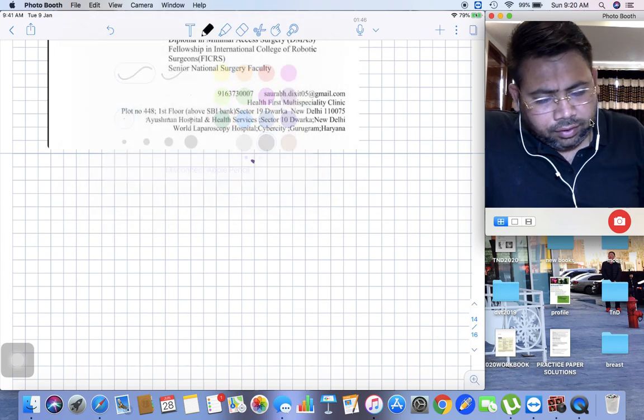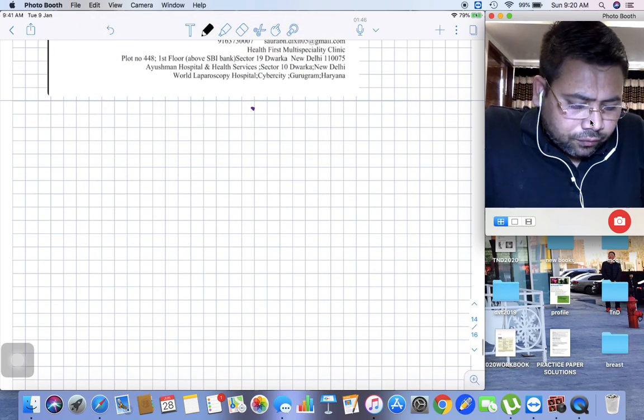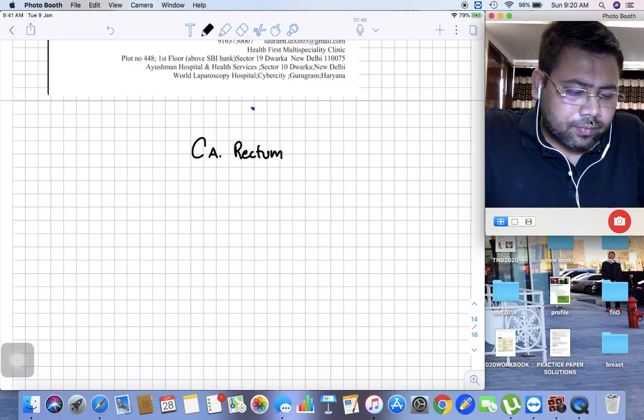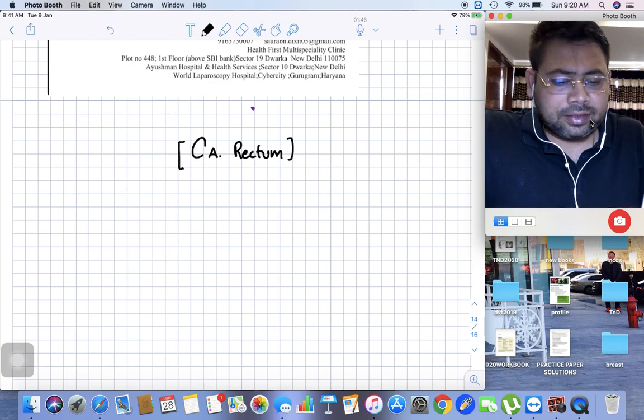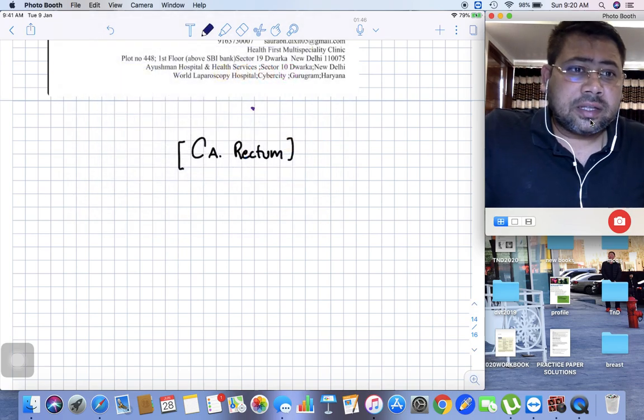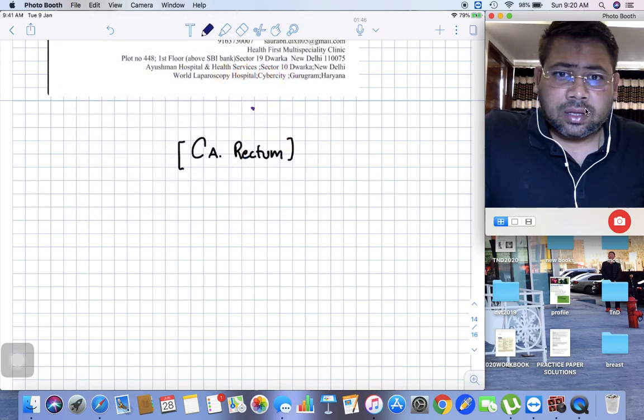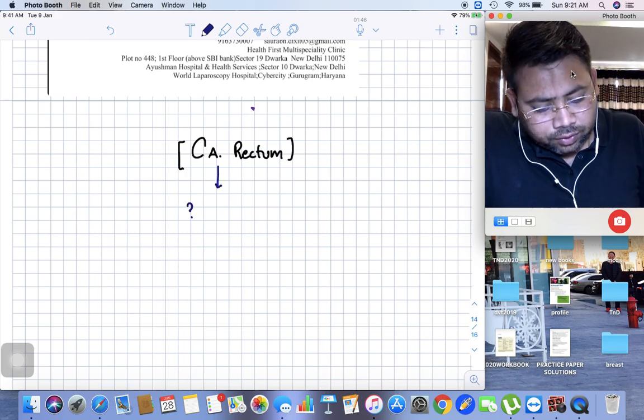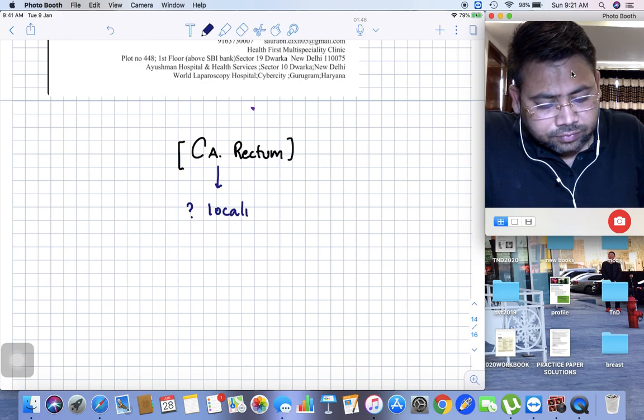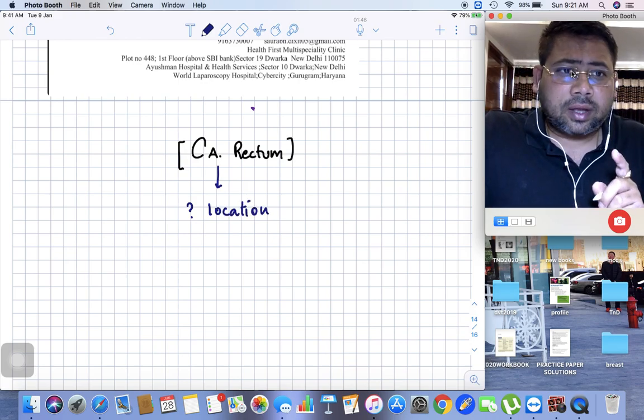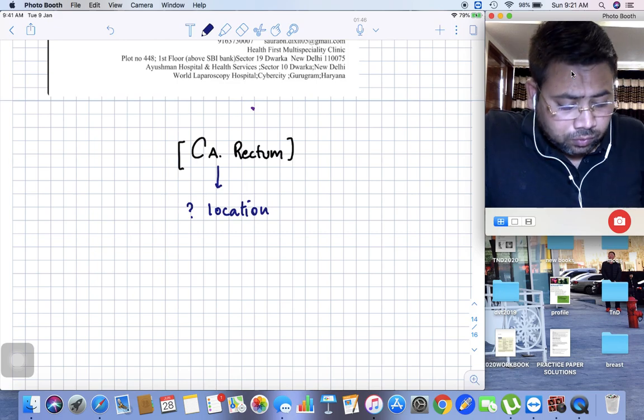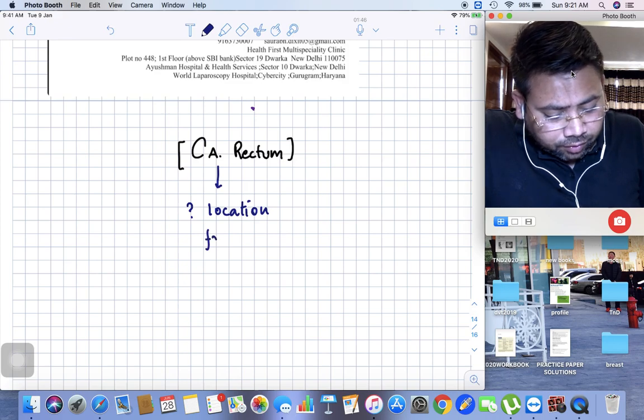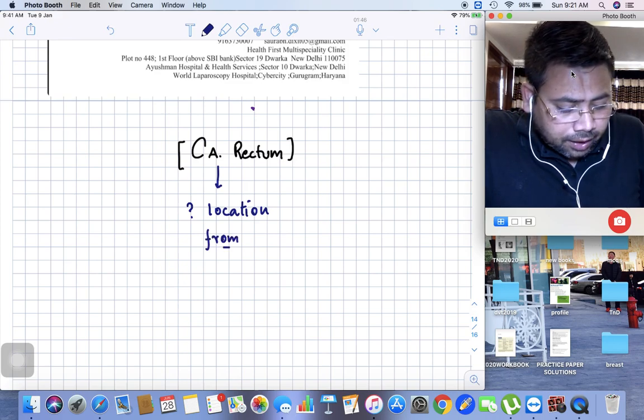Whenever you have a patient of CA rectum or carcinoma rectum, the first thing you need to evaluate is where is the cancer. The first thing to know is the location, specifically the location with respect to the anal verge.